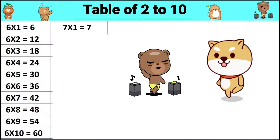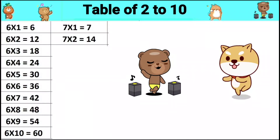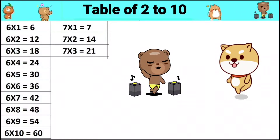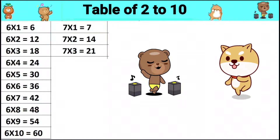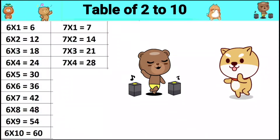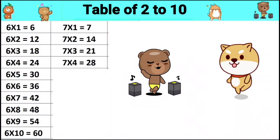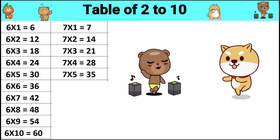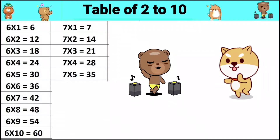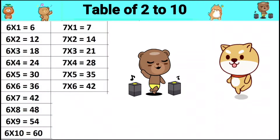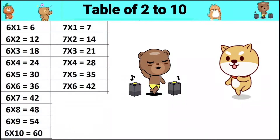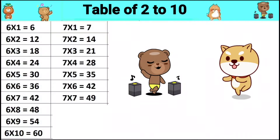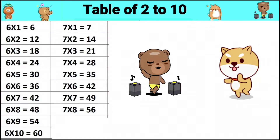Table of seven. Seven ones are seven, seven twos are fourteen, seven threes are twenty-one, seven fours are twenty-eight, seven fives are thirty-five, seven sixes are forty-two, seven sevens are forty-nine.